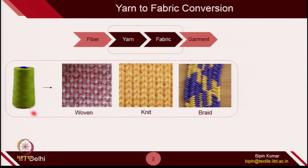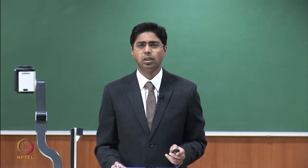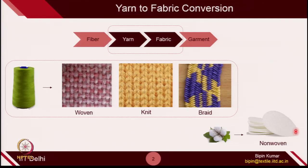You have a yarn which you make from fibers. This yarn, later, with the help of different fabric-making technologies, you convert into different fabric structures. Some of them are woven, knitted, and braided. We also have one fabric technology which is quite popular in the 21st century, called non-woven.